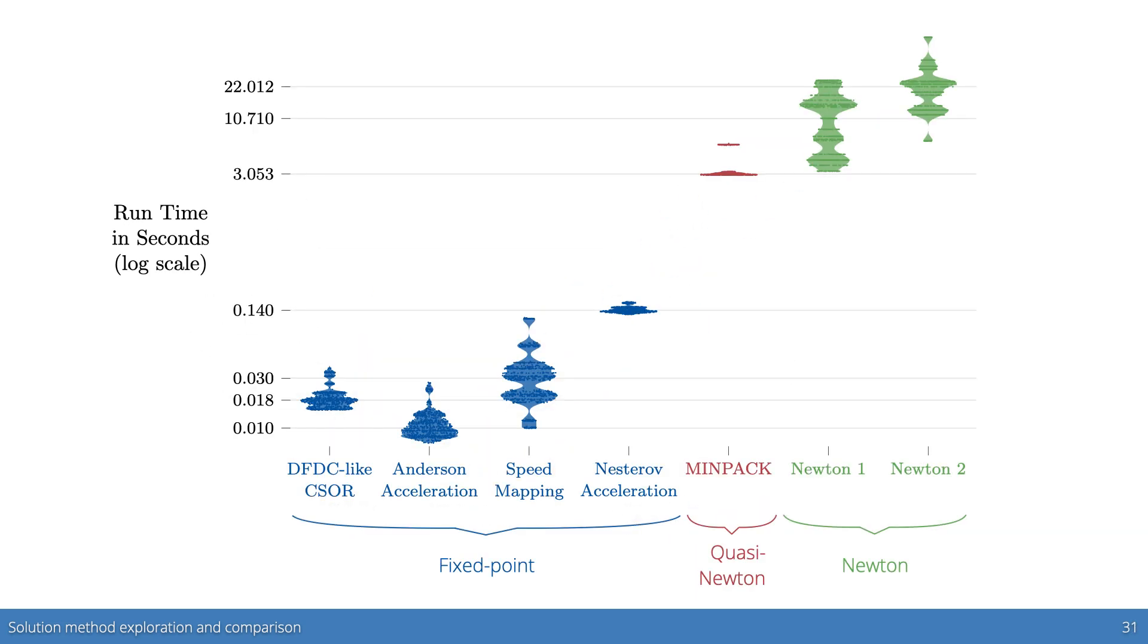We also looked at two Jacobian-based methods for the overall non-linear solve. Despite having fewer iterations, the Jacobian-based methods, both the quasi-Newton method in red and the Newton methods in green, tended to be much slower than the fixed-point methods, simply due to the cost of calculating the Jacobian. Therefore, we have duct tape default to fixed-point methods, while the others are available as user options.